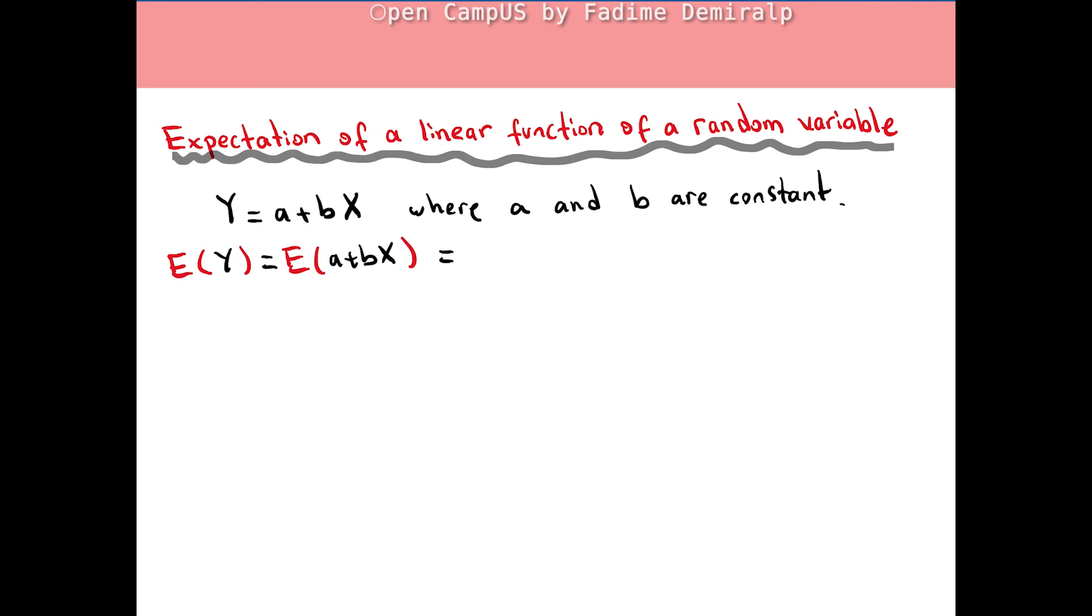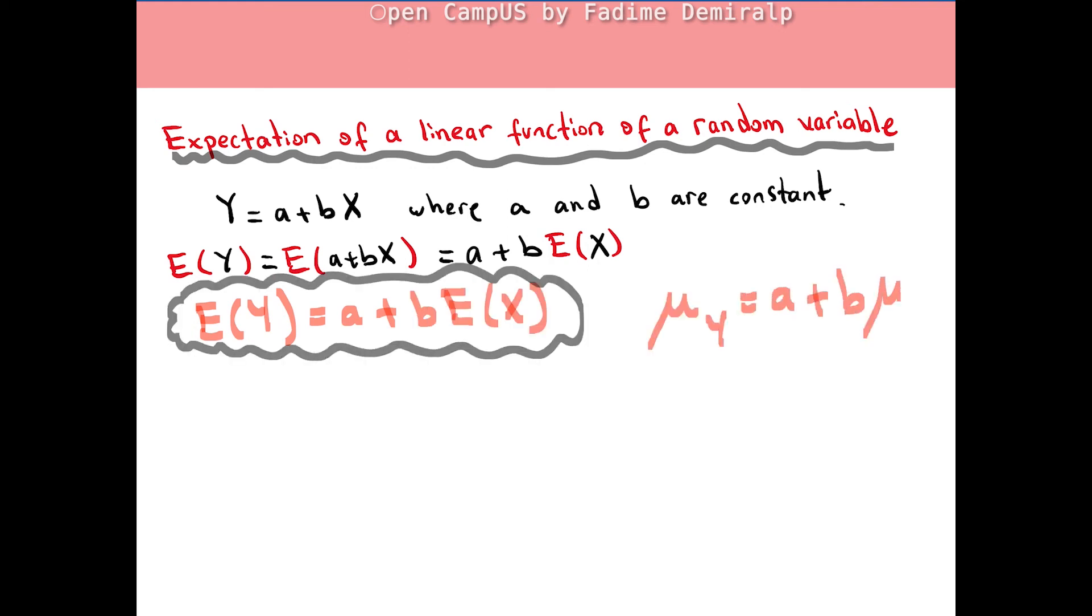Since expected value of a constant is the constant itself, and expected value of a constant times a variable is the constant times the expected value of the random variable, the mean of Y is a plus b times mean of X. We could use μ notation.